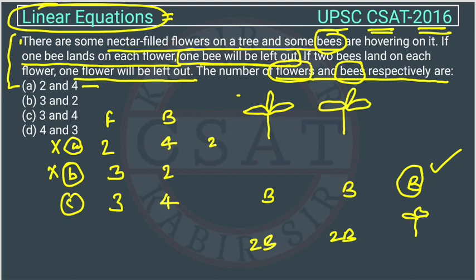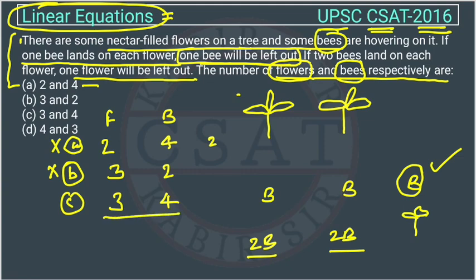Now checking the second condition for option C: we give two bees to the first flower, two bees to the second flower, and then one flower is remaining. So both conditions are getting fulfilled. We have three flowers — attach one bee here, one bee here, one bee here, so one bee remains. Then attaching two bees here and two bees here, one flower is remaining. This condition is also satisfied, so option C could be the answer.